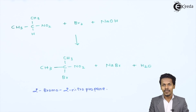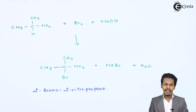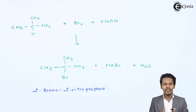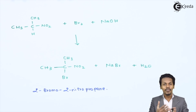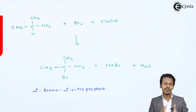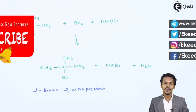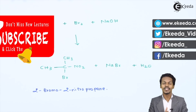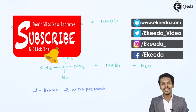Regarding tertiary nitroalkane: the reaction of tertiary nitroalkane with bromine in the presence of NaOH does not occur, and therefore no product is formed. So this reaction is limited to primary and secondary nitroalkanes only. Thank you friends for watching this video; I hope you understood it clearly. Don't forget to subscribe to the Ekda channel.